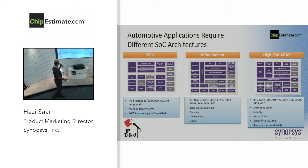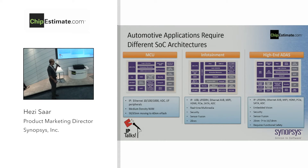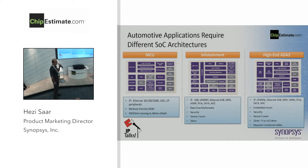We see three main kinds of applications. The first one on the left-hand side is the MCU side, where a microcontroller services multiple kinds of applications. It typically has some kind of Ethernet port for communication, additional sensors, and non-volatile memory for processing. The second one in the middle is infotainment — what the driver and passengers really see. It has displays, cameras, sensors, communication to storage, and is really where the car provides you information.